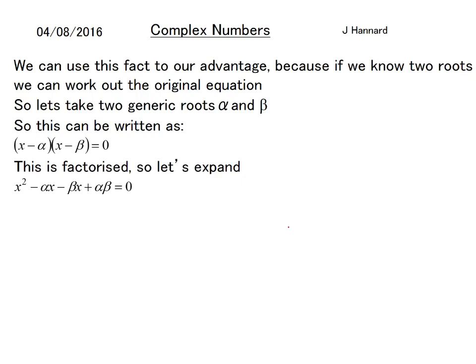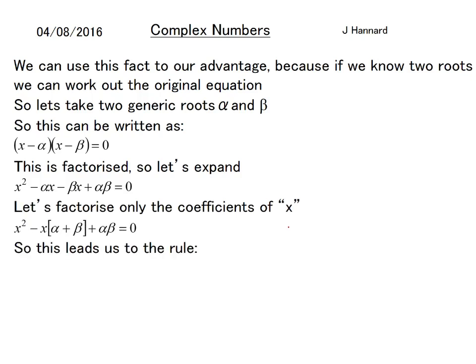This is factorized, so let's expand that bit. Let's factorize only the coefficients of x, so we get x² - x(α + β) + αβ = 0. This leads us to the rule: x² - (sum of roots)x + (product of roots) = 0.